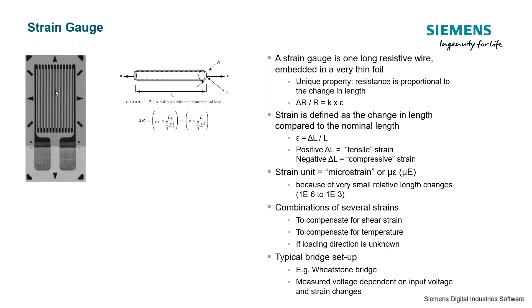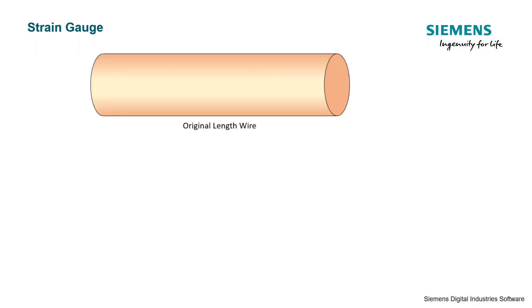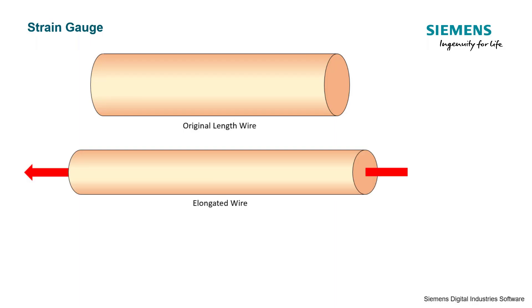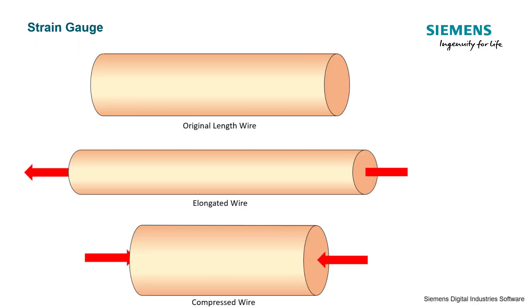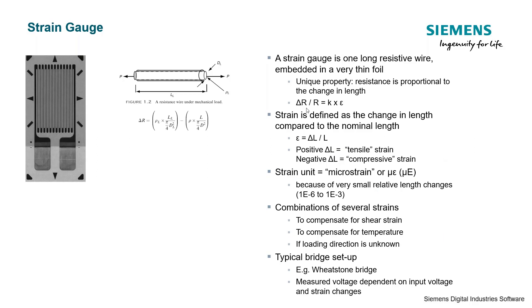When the strain gauge deforms, the wire will either elongate or shorten depending on whether we have a tensile or compressive load. A property of a wire under mechanical load is that its resistance will either increase or decrease, and we are able to relate the change in resistance of this wire to the strain felt on the test object.